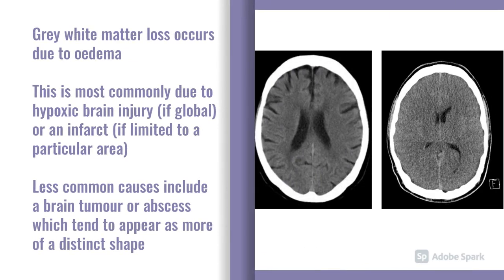Another thing we look at in terms of brain quality is grey to white matter differentiation. On the normal CT on the left, there's lighter tissue to the outer aspects of the brain and darker tissue around the ventricles. But on the pathological example on the right, that colour differentiation is lost and everything looks more uniform. This is an example of the loss of grey-white matter differentiation, largely due to oedema, most commonly due to hypoxic brain injury. You can also see this in patients with infarcts, though that is generally more limited to a vascular territory. Less common causes include a brain tumour and an abscess, which tend to have a slightly more distinct, often irregular circular shape.